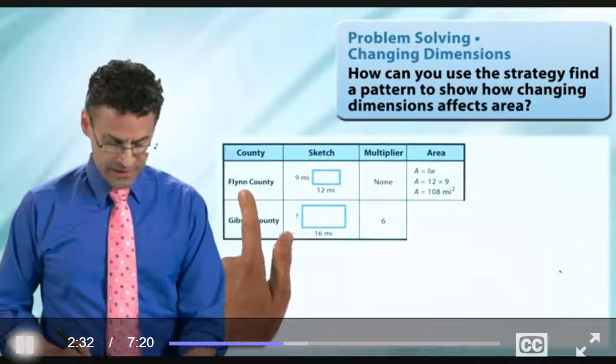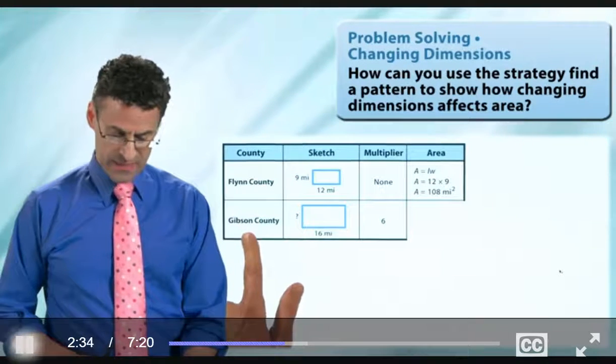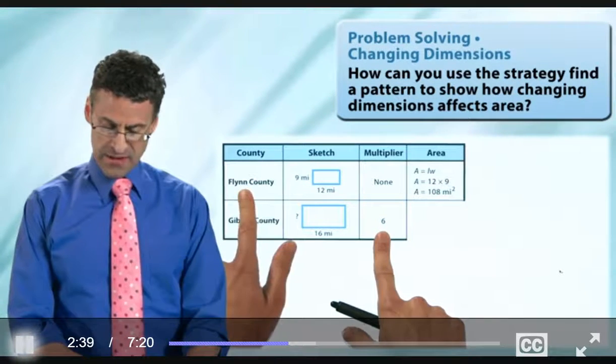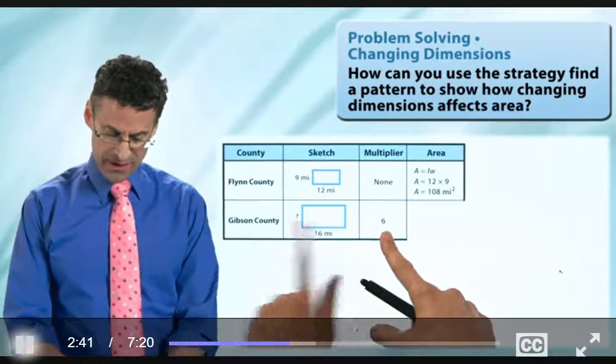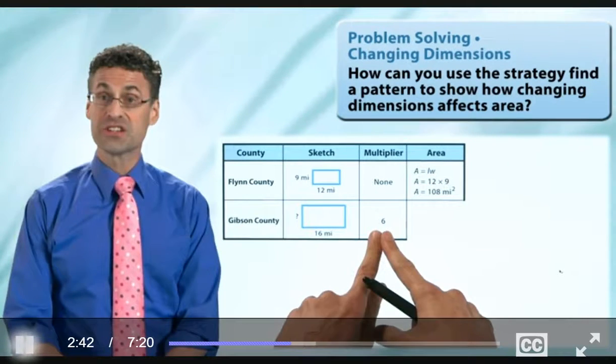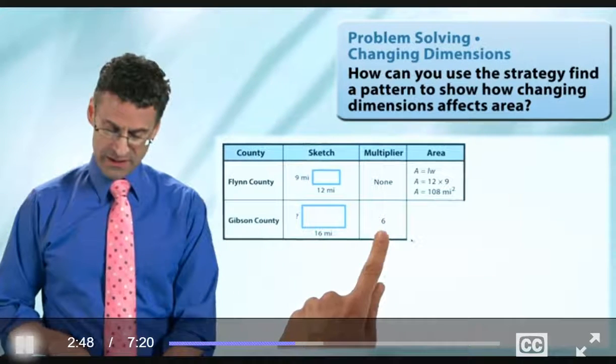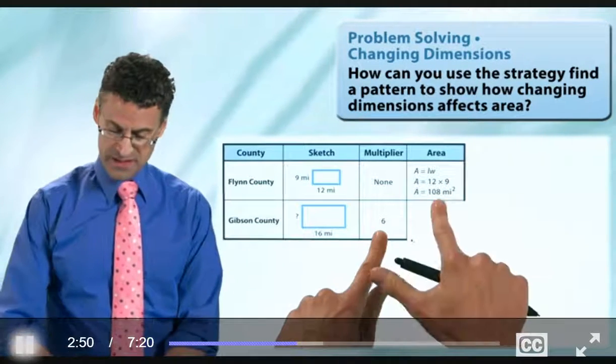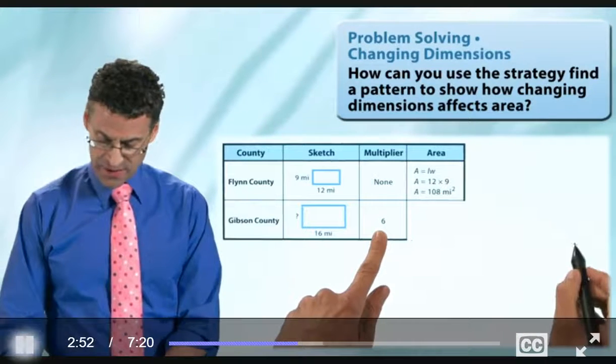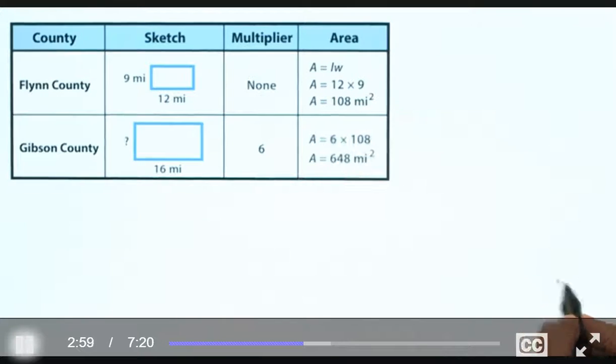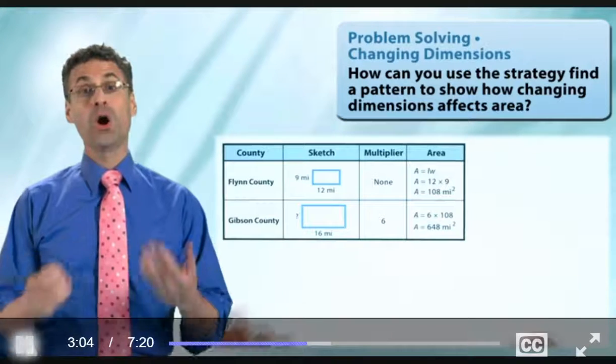So, now, knowing that that's the area of Flynn County, and we know that Gibson County has an area six times the area of Flynn County, that means we can find the area of Gibson County by just taking six times the area we just found for Flynn County. That's what it means to have an area six times as large as this area. So, all we have to do now is take this number and multiply it by six. And if we work that out, we see, in fact, that it is 648 miles squared.